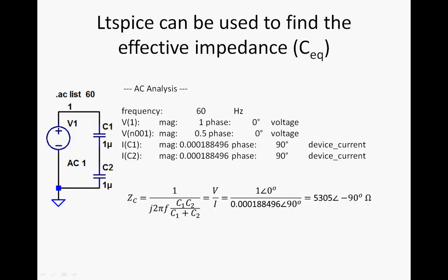Now we can also use it to find the equivalent impedance, or another way to look at it is the C equivalent. So here we have two capacitors in series, and the impedance for the effective capacitance should be 1 divided by j2πf times C effective.